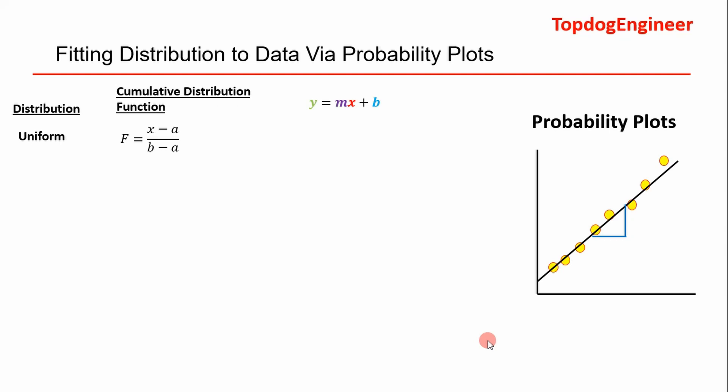You can research that more if you want to, but this is the meat and potatoes of this presentation. This right here is really cool—you can model your distributions as linear lines by simply algebraically manipulating the cumulative distribution function for each distribution. For example, we've all seen this, the uniform distribution can be modeled by this function right here, where a is your minimum value, b is your maximum value, F is your cumulative value, and x is the value of your variable.